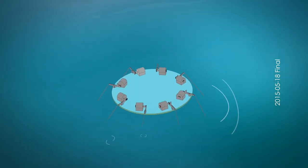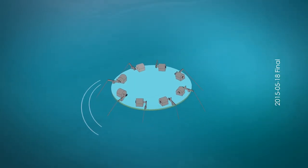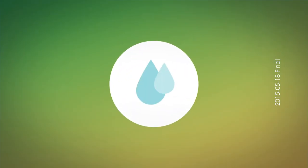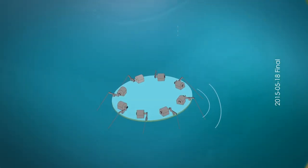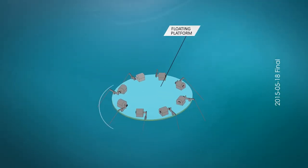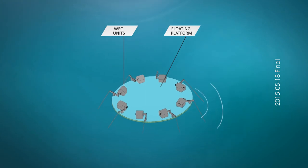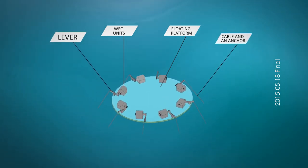Through this unique invention called energy conversion system for ocean waves, we can harvest ocean wave energy and convert it into electricity very cost-effectively. This system consists of a floating platform, wave energy capturing units, lever, cable, and an anchor.